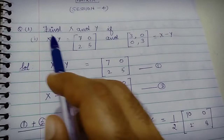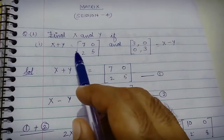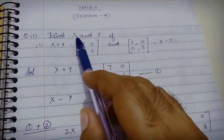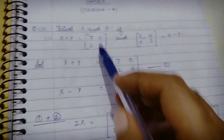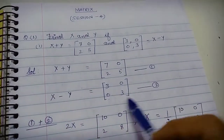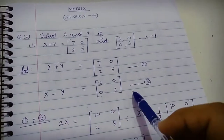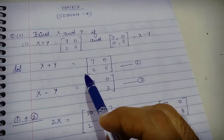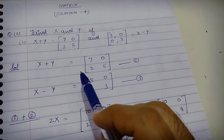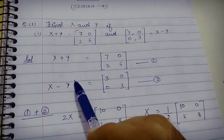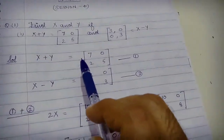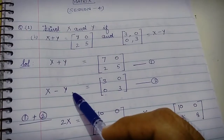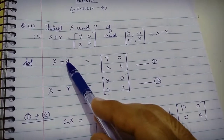In our first question, we are given two equations: X plus Y equals one matrix and X minus Y equals another matrix, and we have to find the values of X and Y. The solution is similar to linear equations in two variables studied in earlier classes. We add the two equations because the coefficient of Y is plus 1 and minus 1 respectively.